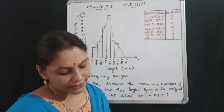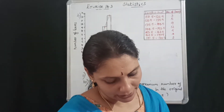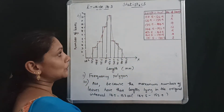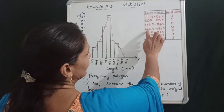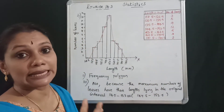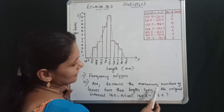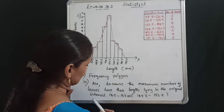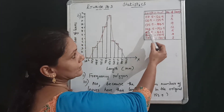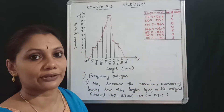The third question: Is it correct to conclude that the maximum number of leaves are 153 mm long? No, that is not correct. The class interval is 145–153 mm, which adjusts to 144.5–153.5. The maximum number of leaves have their length lying in this class interval.